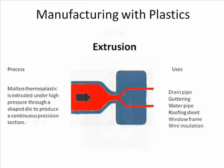Extrusion: moulding thermoplastic is extruded under high pressure through a shaped die to produce a continuous precision section. Drain pipe, guttering, water pipe, window frames and insulation wire are examples of this.